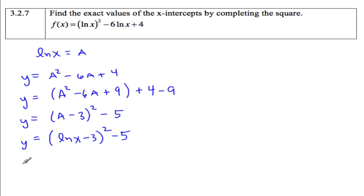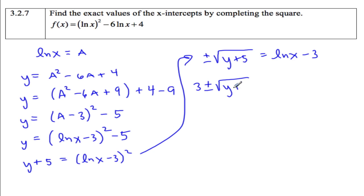So y plus 5 is equal to ln(x) minus 3 squared. Square root. So we have plus and minus. y plus 5 is equal to ln(x) minus 3. We'll add 3, so we have 3 plus and minus the square root of y plus 5 equals ln(x).